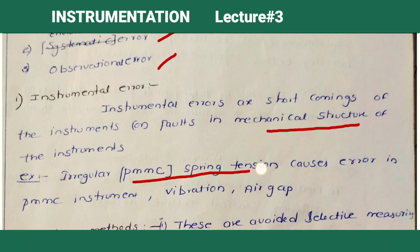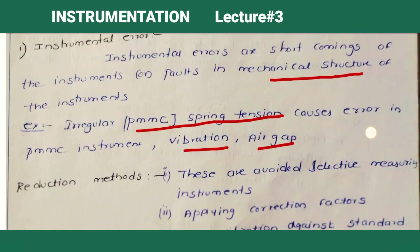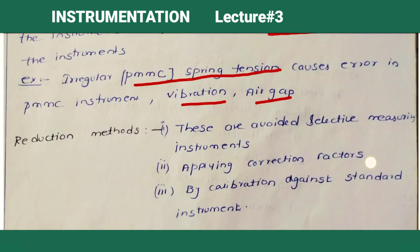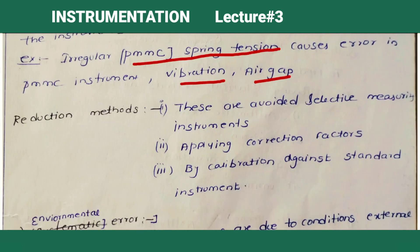How to reduce instrumental errors: this is avoided by selecting suitable measuring instruments, applying correction factors, and by calibrating against a standard instrument. By calibration, we can reduce these errors.